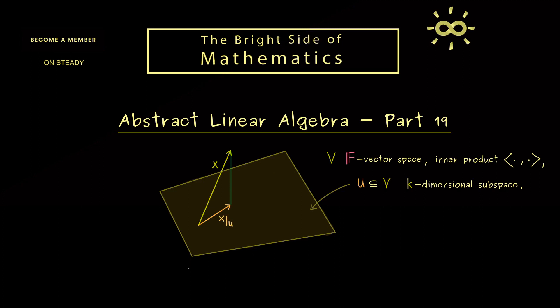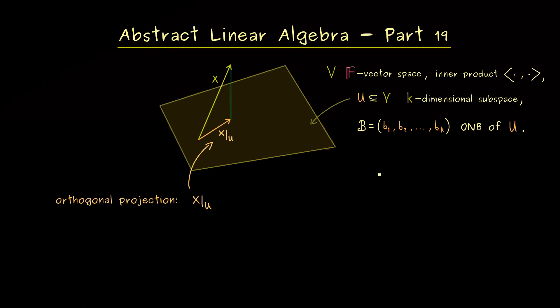And moreover, we know how to calculate this orthogonal projection if we have an ONB in U. So let's recall this formula for x restricted to U. And to write this down we just need an ONB for our subspace U.